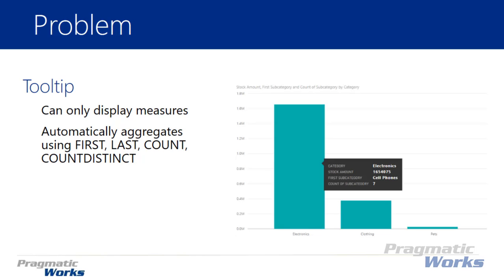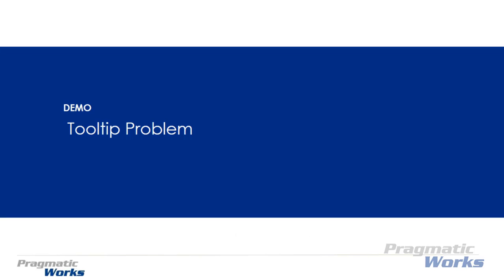Explicit measures are calculations you create on your own. If you drag in an implicit measure, Power BI automatically aggregates the value using either the first, last, count, or count distinct functions within DAX. Let's go ahead and walk you through what this problem really is, how it works, and then we'll move on to show you possible solutions to solve this problem.